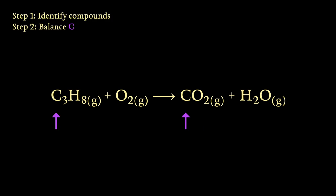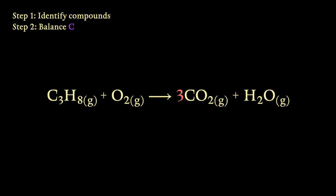It's easiest to first balance the amount of carbon on each side. Propane contains three carbon atoms, so we need three lots of carbon dioxide to match. We leave the other compounds alone for now, because they don't contain any carbon.